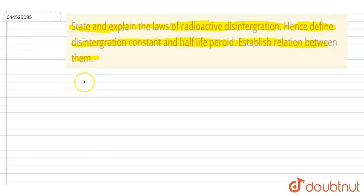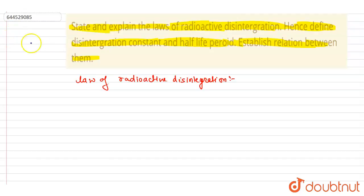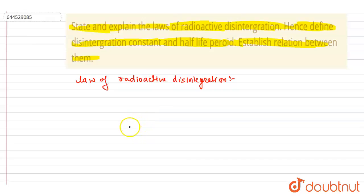The law of radioactive disintegration states that the rate of disintegration — the rate of decay per unit time — is directly proportional to the total number of nuclei of the radioactive compound present in the sample.